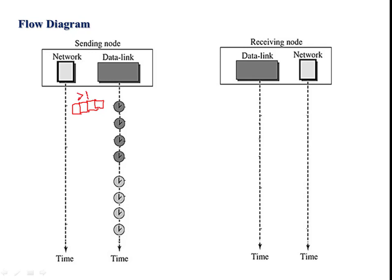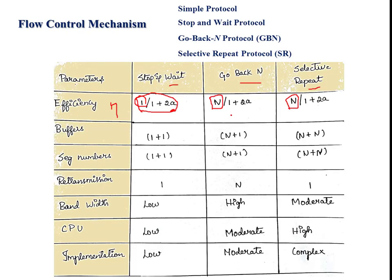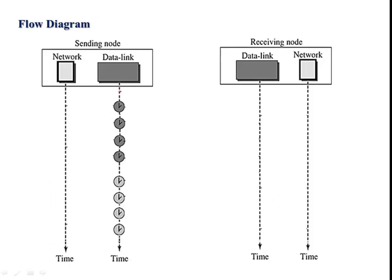Because the sender window size is greater than one, we can transmit more packets in a given time, so the efficiency in go-back-N and selective repeat is more than in stop-and-wait protocol. Next, buffers — which is nothing but window size. In stop-and-wait, the sender window size is one and receiver window size is one. In go-back-N, the sender window size is greater than one, but the receiver window size is actually one.